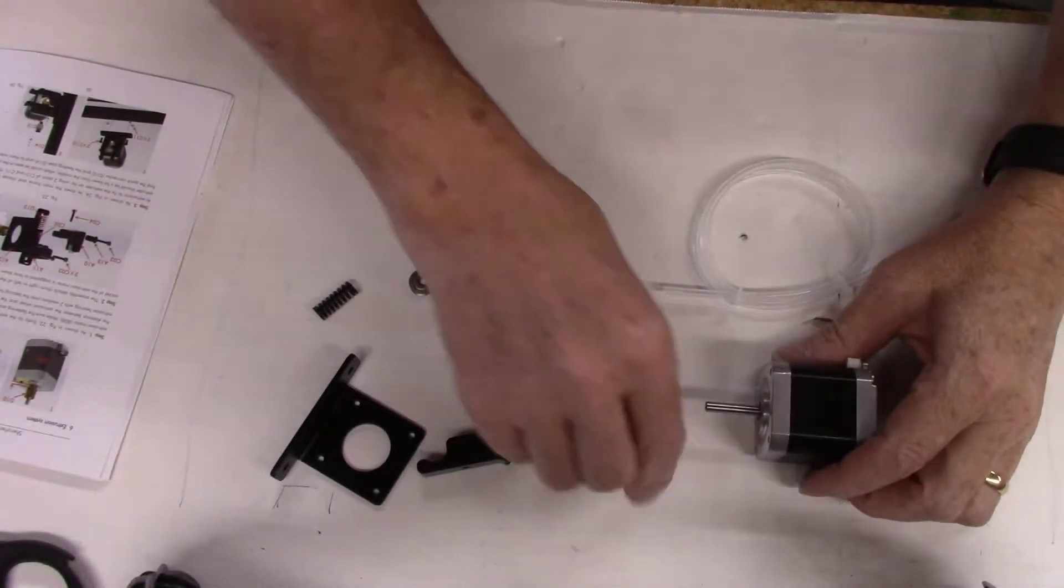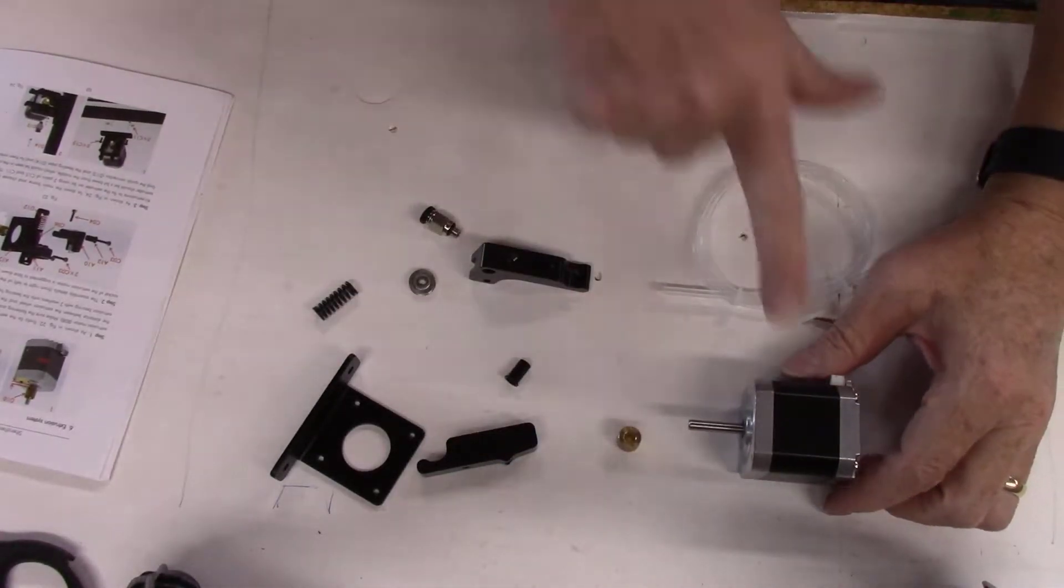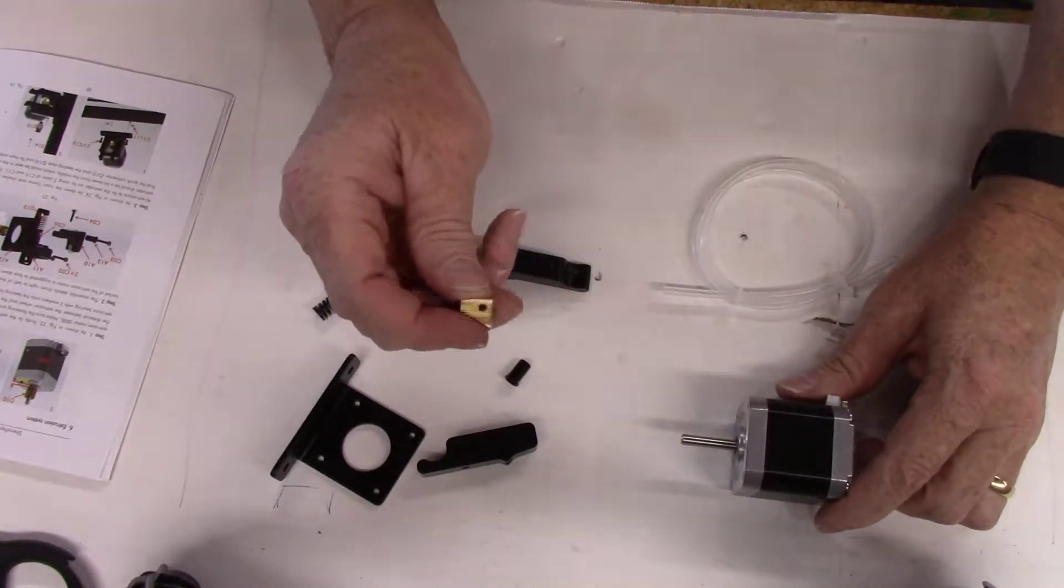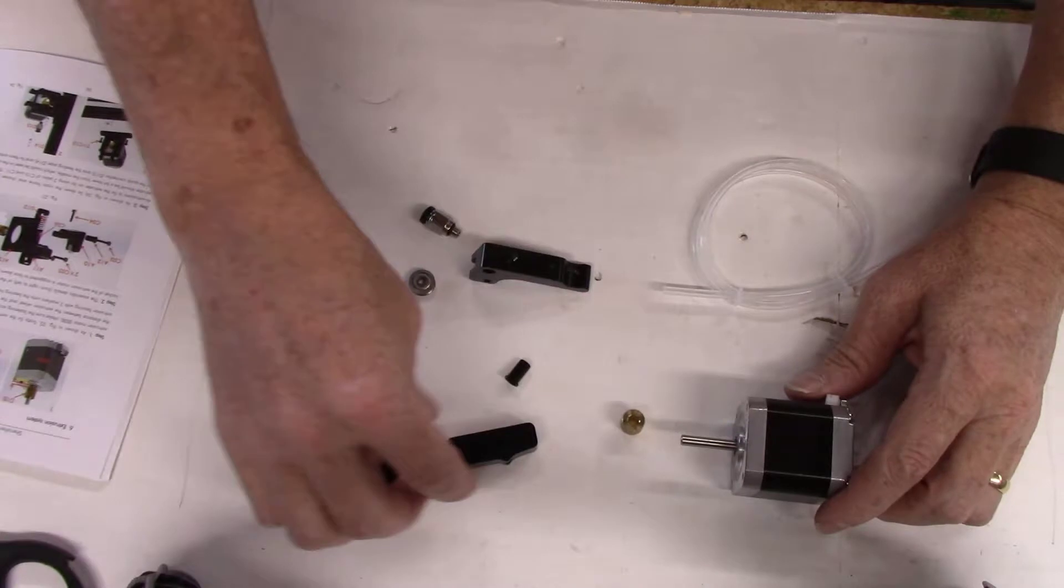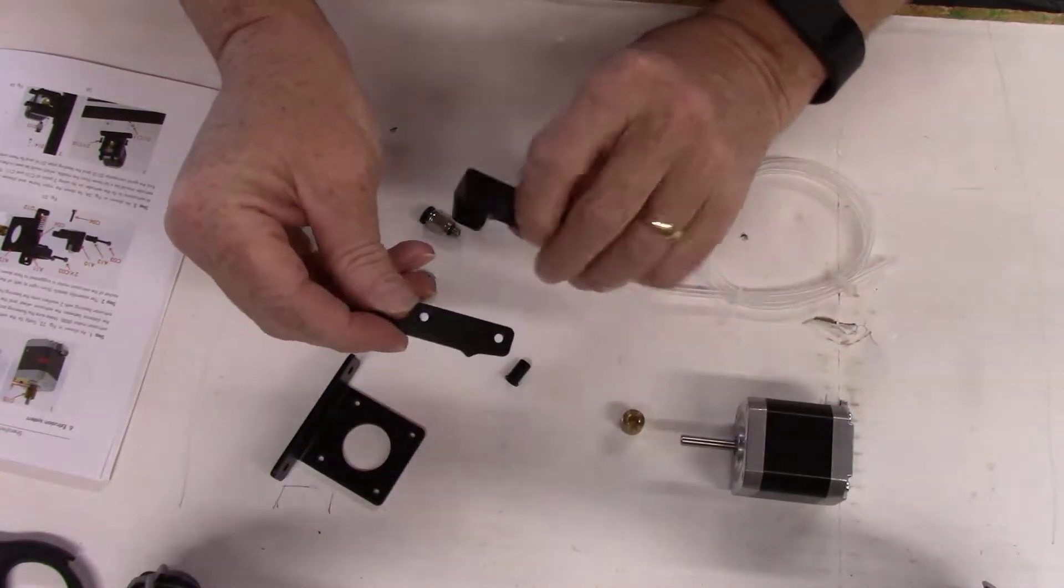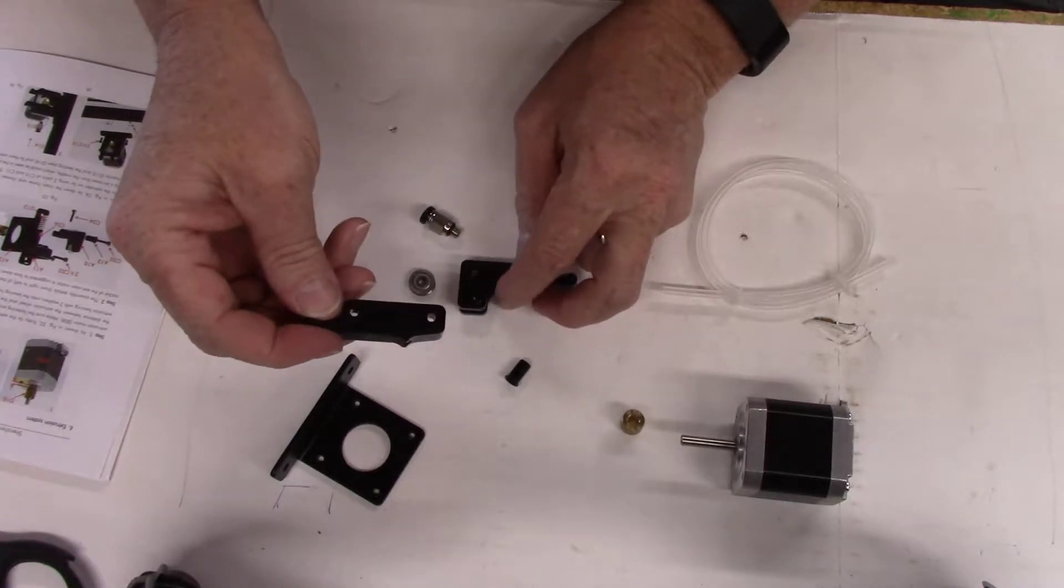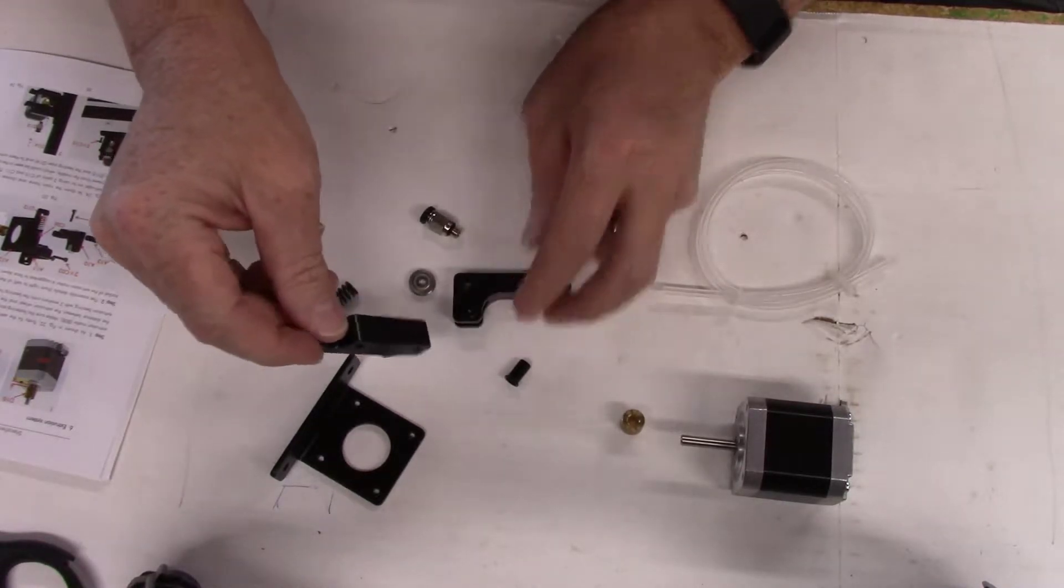Okay, here we go. The parts we need to put the extruder assembly together are first of all the stepper motor, the drive toothed wheel, and these parts that allow you to release the tension when you install and remove filament from the system.